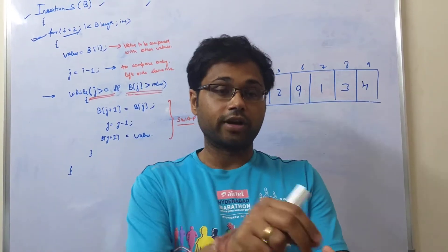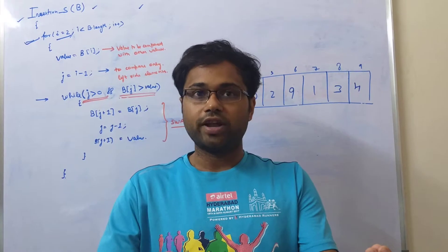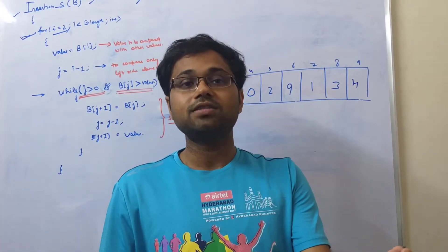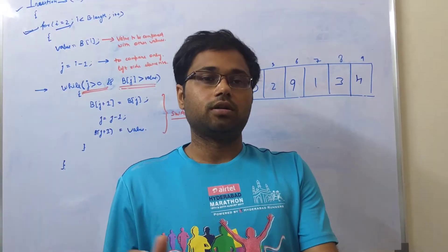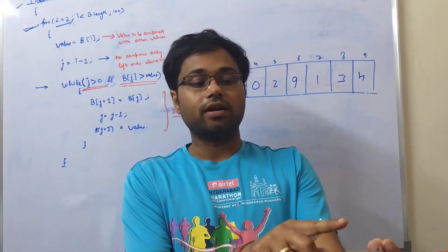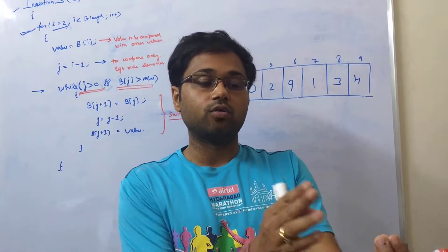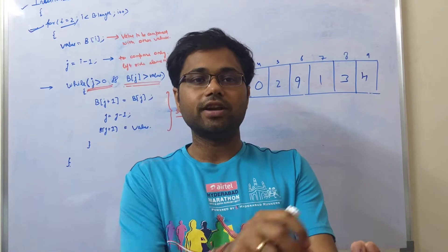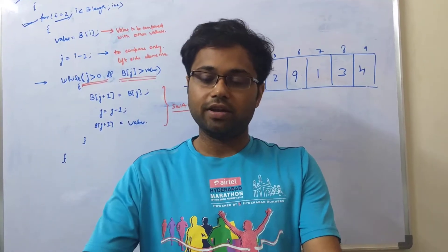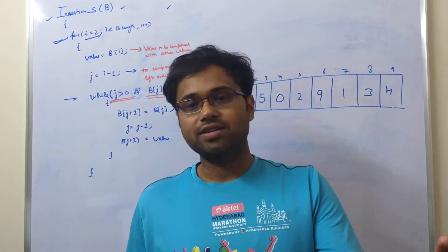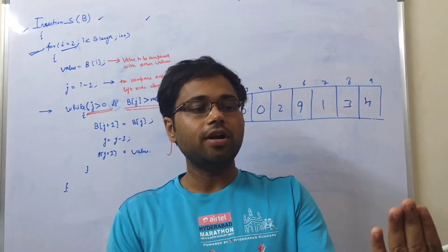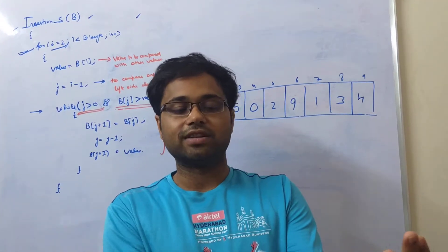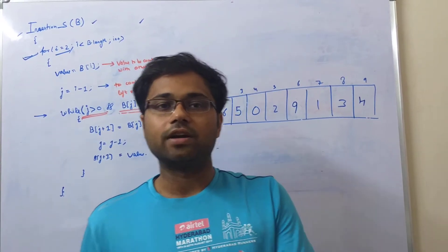Now you take another card and compare it with the card in your left hand to see whether it is greater or lesser, and place the second card accordingly — depending on whether you want increasing or decreasing order. Then you take a third card and compare it to decide whether to insert it in between, to the right, or to the left. If it is greater, we shift it to the right; if lesser, to the left. This is how insertion sort works — you take each card and see where to insert it among the already sorted cards in your left hand. That is why it is called insertion sort.